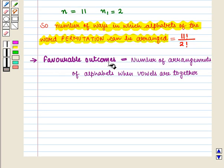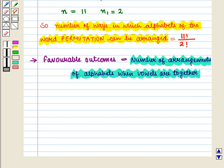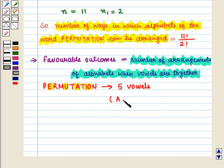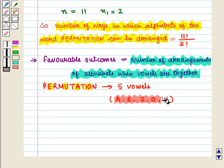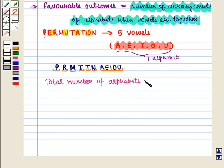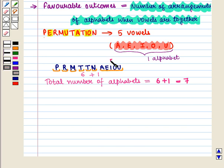The favorable outcomes are the number of arrangements when vowels are together. In the word PERMUTATION there are five vowels: A, E, I, O, and U. Treating these vowels as one single alphabet, the total number of alphabets becomes 7. These five vowels can also be permuted among themselves in 5 factorial ways.